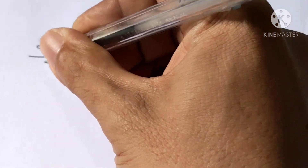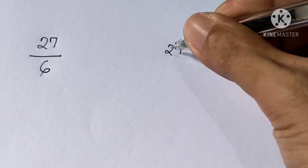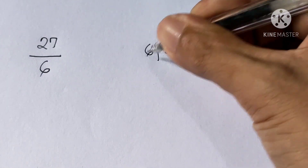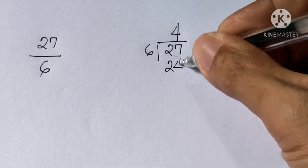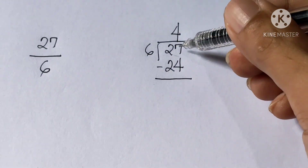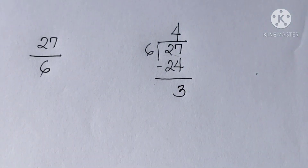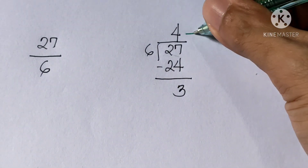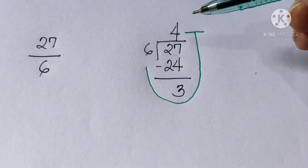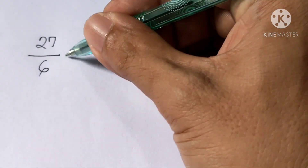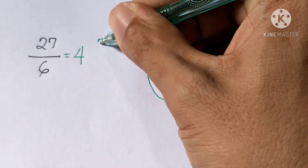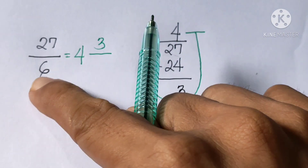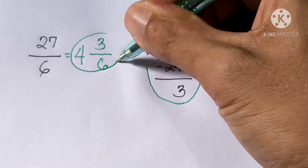For example 3: 27 over 6. Again, we are going to divide 27 by 6. 27 divided by 6 gives us 4. Then, 4 times 6 is 24. Let us subtract: 27 minus 24 is 3. Draw a capital letter J. The quotient, 4, becomes the whole number. The remainder, 3, becomes the numerator. Copy the denominator, 6. So, the answer is 4 and 3/6.